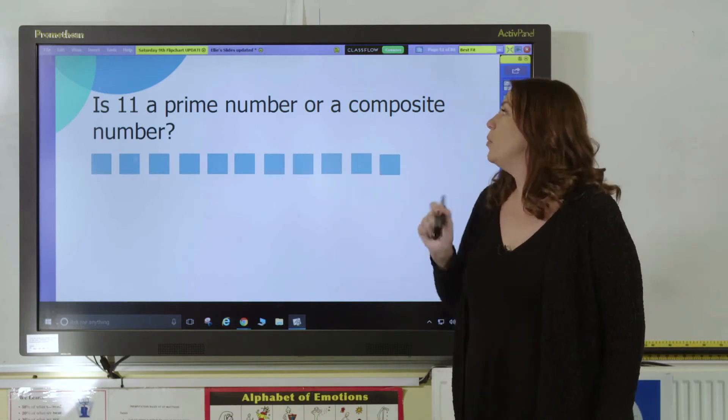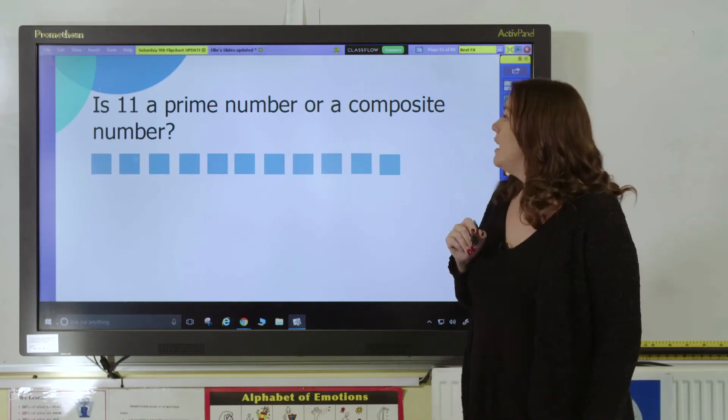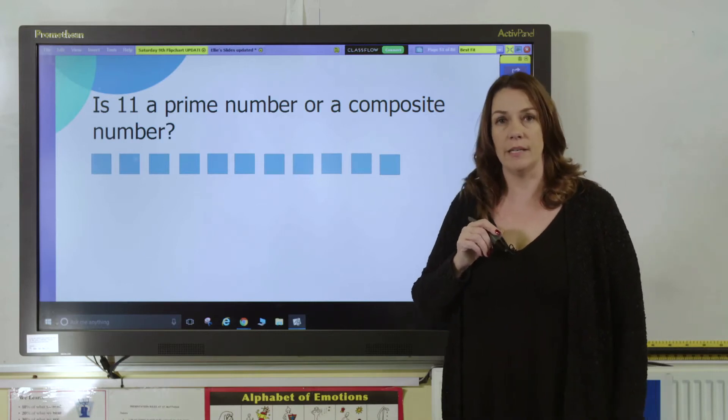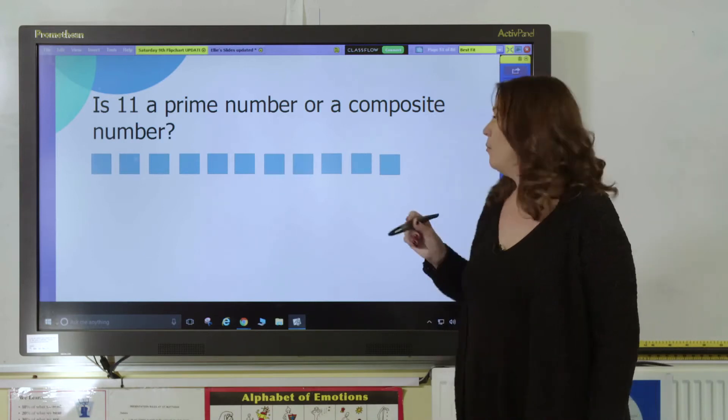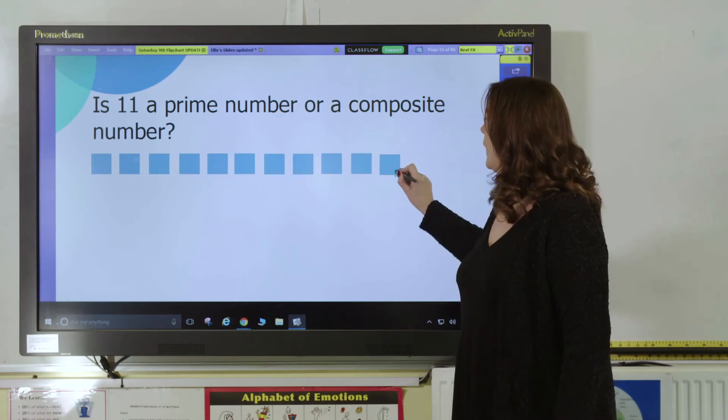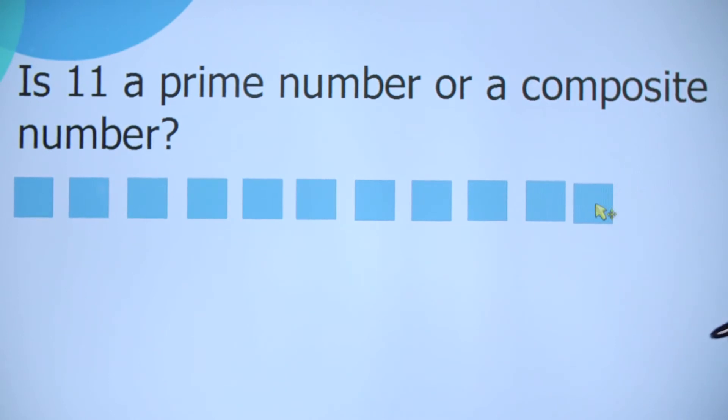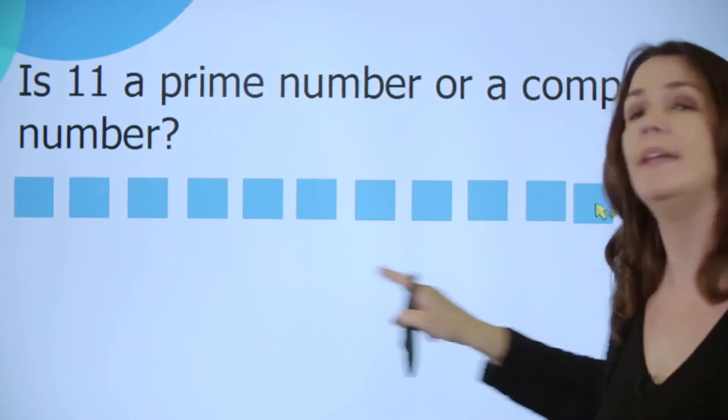Here I have some base 10 blocks, and the question is: Is 11 a prime number or a composite number? So let's investigate. We can move our base 10 blocks and see that we could make 11 groups of 1, or we could make one big group of 11.